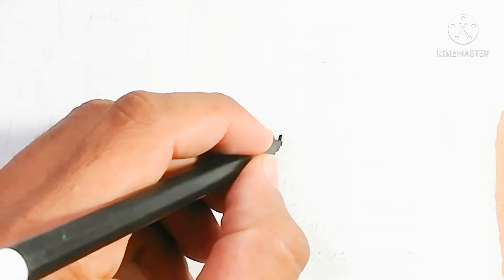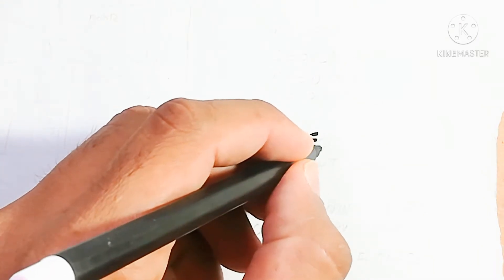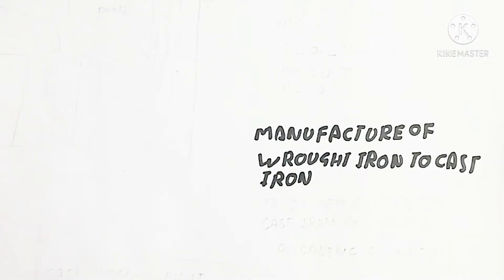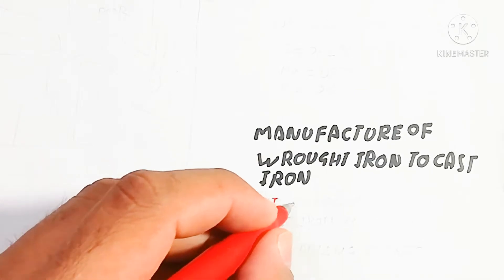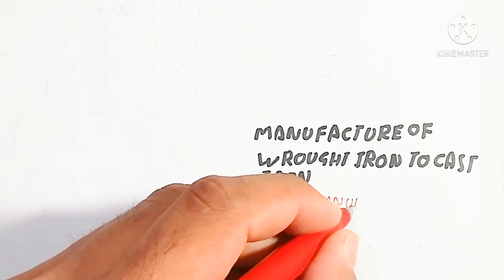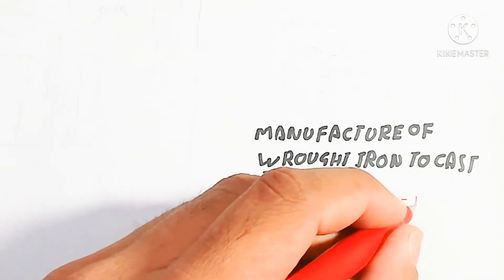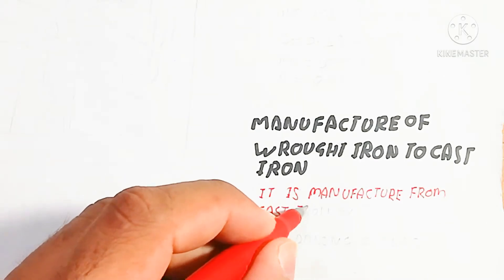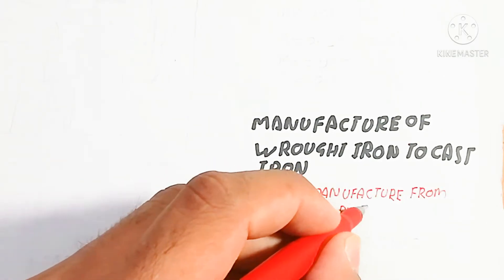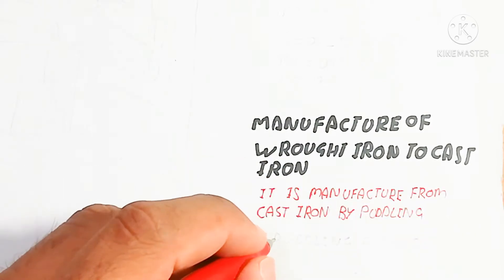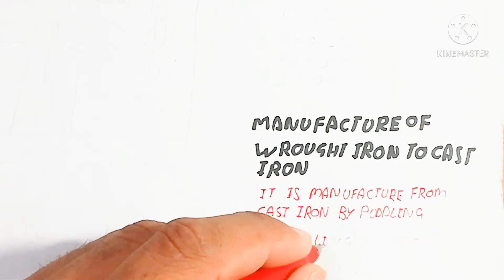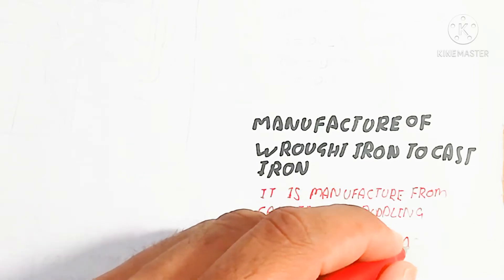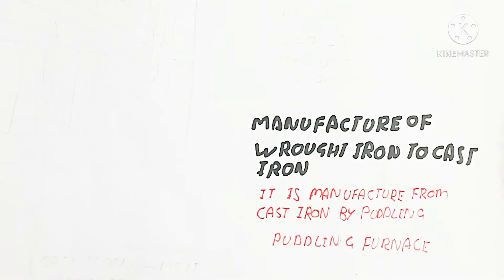Hello, in this video we will discuss the manufacture of wrought iron from cast iron. Wrought iron is the best iron as compared to cast iron. There are different processes to make cast iron and wrought iron. It is manufactured from cast iron by puddling, using a puddling furnace. We will discuss the puddling mechanism in detail to understand the making of wrought iron.